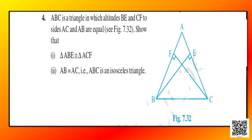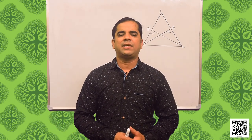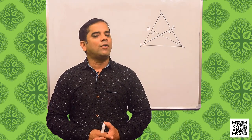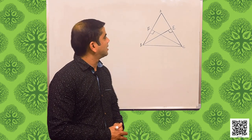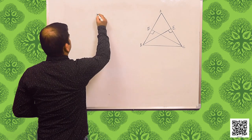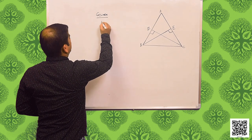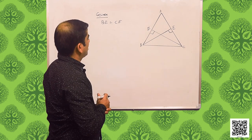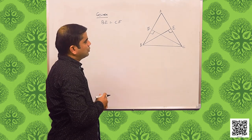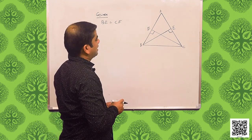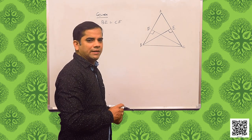Question 4 says: ABC is a triangle in which altitudes BE and CF to sides AC and AB are equal. The diagram is given in your book and I have drawn the same diagram. The question asks us to prove that triangle ABE is congruent to triangle ACF, and that AB is equal to AC, meaning ABC is an isosceles triangle. Let us concentrate on the given data: BE is equal to CF, and since they are altitudes, angle BFC is equal to angle BEC, that is 90 degrees.